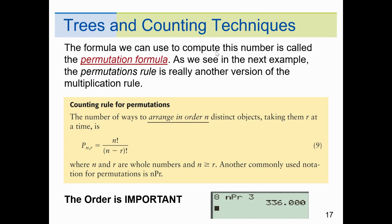To arrange N distinct objects taking R at a time, the permutation formula is N factorial divided by (N minus R) factorial. The key thing with permutation is that order is important — A, B, C and C, B, A are different arrangements. So for eight things taken three at a time, I use permutation because order makes a difference. Rather than working through the formula by hand, I can just plug in 8, go to math, arrow to probability, come down to permutations, put in 3, hit enter — and get 336.